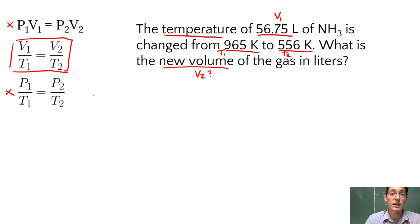Once you have decided which law you are using, now it's a matter of getting variables into the right place and solving your ratio. So V1 over T1. V1 is 56.75 over T1, 965K. All of these need to be in Kelvin before you solve them, so remember to add 273 if this were Celsius.